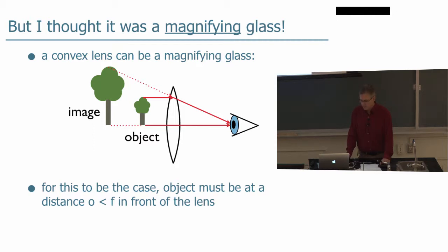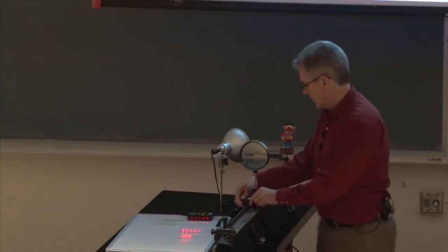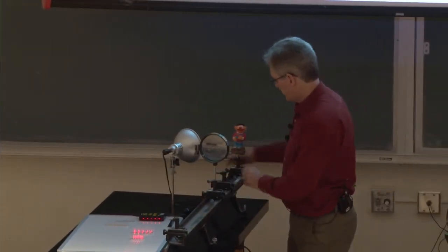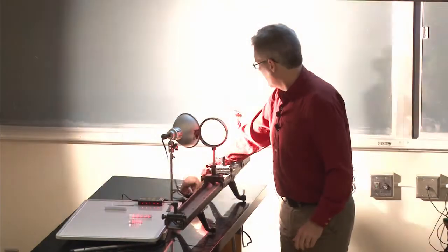In this case, the object has to be a distance less than O, distance O less than F from the lens. And again, we'll use Ernie and try to do that. We'll move the lens close. We'll move Ernie close.